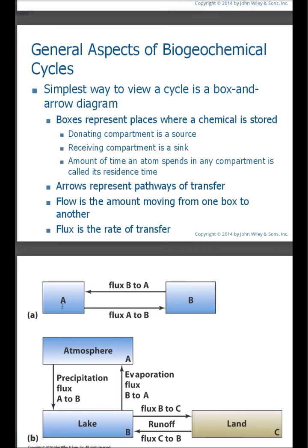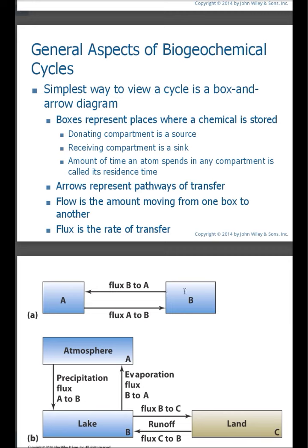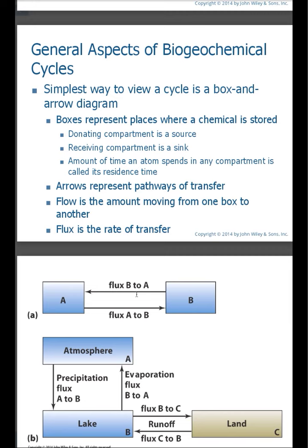This is the simplest way of describing a biogeochemical cycle. The arrows represent the direction or the pathway of transfer. This is a simple representation of the hydrologic cycle. Box A is the atmosphere, box B is the lake, box C is the land. We transfer water between all three of these reservoirs. From the atmosphere to the lake, you have precipitation falling — a transfer of water in the liquid state into the lake. But there's also evaporation off of lakes, so the transfer of water in the gaseous stage is from the lake to the atmosphere, making the lake the source and the atmosphere the sink. We also have runoff from the lake to the land and from the land to the lake.